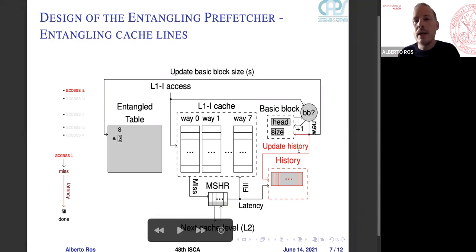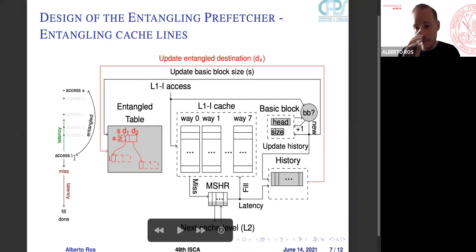So with the latency, we can go back in time here and we need to find which is the access that we will use as the source. For that we use a history buffer. The history buffer, we insert all the heads of basic blocks. So here, when we go back in time, we will find not the access C, not the access B, but the access A, which was the head of the previous basic block. And we can entangle A with L. When we find this pair, we store it. We take A along with L and we store it in the entangled table. So A is a source and will have a destination, first destination L.